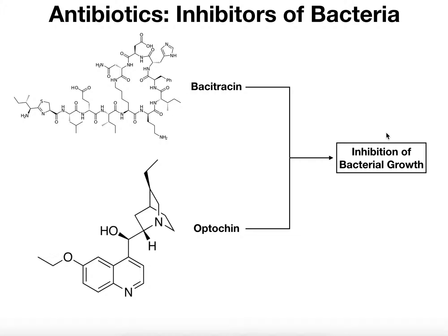A great example of this is MRSA. MRSA is a highly pathogenic bacterial strain of Staphylococcus aureus. MRSA stands for methicillin-resistant Staphylococcus aureus, meaning that this particular strain is no longer able to be killed by the antibiotic methicillin because they're methicillin-resistant. There are a lot more cases of resistance than you would think. In this lab, we'll be able to tell whether a particular species is resistant or susceptible to an antibiotic.